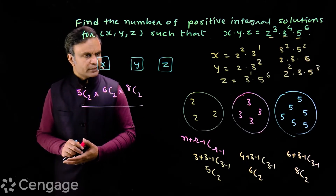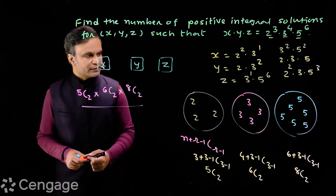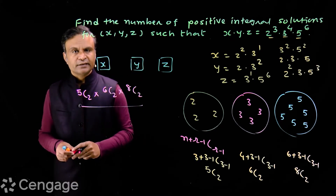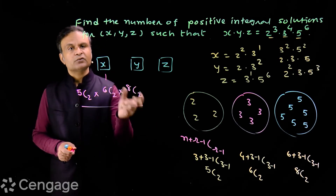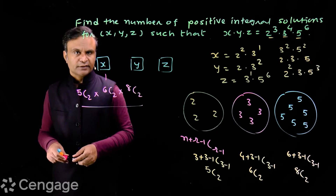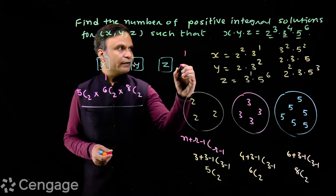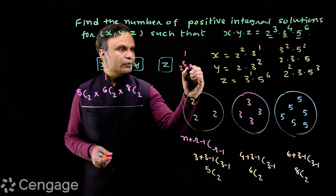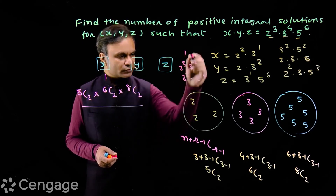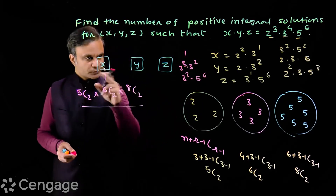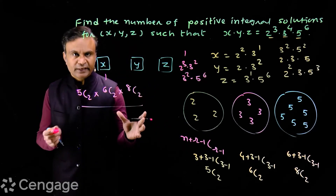Now, it may happen that x receives none of the factors — all factors are distributed between y and z. In that case, the value of x will be 1. For example, x = 1, y = 3², z = 3² × 5⁶ is also one of the solutions. This is considered valid because when distributing using this formula, we are allowing empty groups.